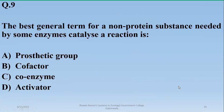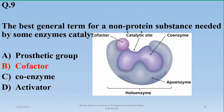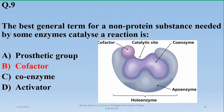Number nine: the best general term for a non-protein substance needed by some enzymes to catalyze a reaction is cofactor. Its types include prosthetic groups, coenzymes, and activators — the non-protein covalently or loosely attached structures associated with enzymes.